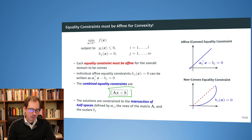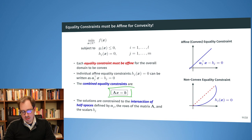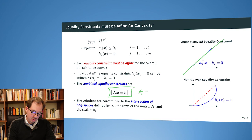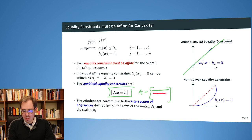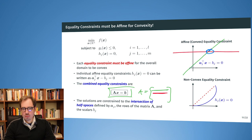Since we only allow affine equality constraints, we can combine all of them into a single equation Ax = b. We compress all equality constraints into one compact form. Geometrically, the solutions are constrained to the intersection of hyperplanes: the first row of A gives one hyperplane (shown as a green line), the second row gives another. In higher-dimensional spaces, these are planes or hyperplanes, and the solution set lies in their intersection — still leaving a range of possible solutions.